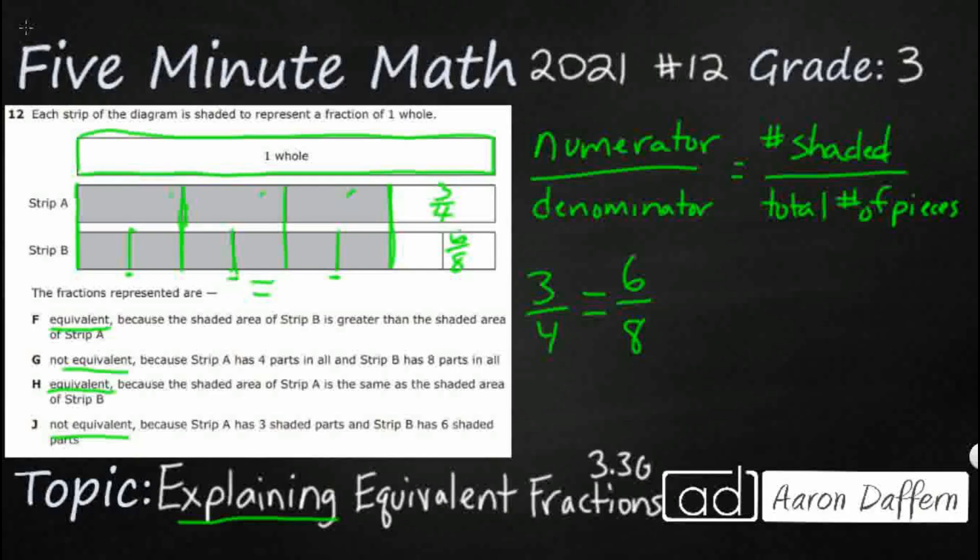But other than that, they're exactly the same. That's why there are twice as many pieces in the six-eighths. You notice how you can just kind of double the three, and double the four, and you can get your six-eighths. Yeah, you take your three-fourths, cut each fourth in half, and you get six-eighths.